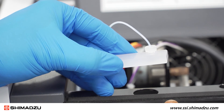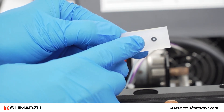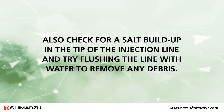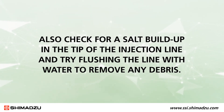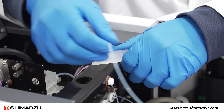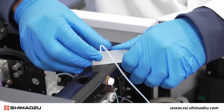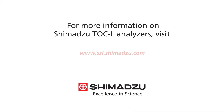If the sample is not being injected correctly, then check the position of the sample tubing relative to the slider and reposition as needed. Also check for a salt buildup in the tip of the injection line and try flushing the line with water to remove any debris. If all else fails to remedy the poor injection, then replace the sample injection tubing. That should resolve your reproducibility issues. For more information on Shimadzu TOC-L analyzers, visit www.ssi.shimadzu.com.